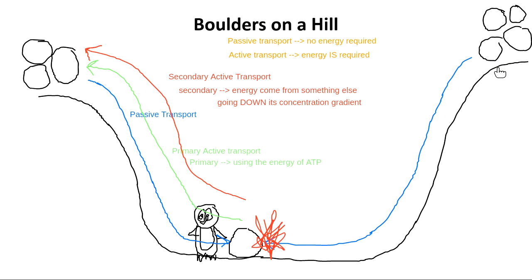In a cell, this analogy is a little bit dicey because usually what happens is both of these molecules are transporting together across a membrane. If we did this experiment in real life, all the energy from the boulder rolling down would be given to the boulder at the bottom to push it up the hill, and the first one would just get stuck down here.